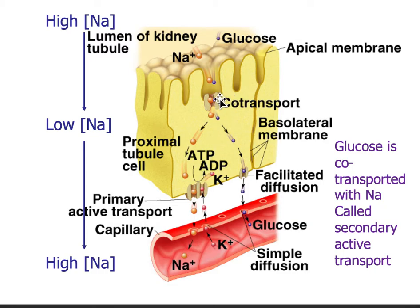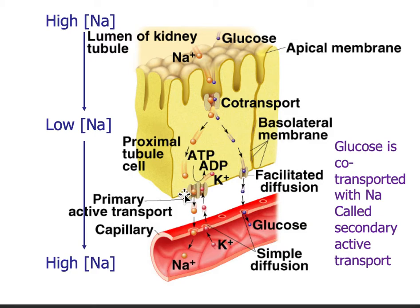This first step — going from the lumen into the proximal tubule cell — is a co-transporter. As sodium naturally flows in, glucose will pair up and be co-transported into the cytoplasm. We call this secondary active transport, because the very next step requires ATP for the sodium to be pumped out. Remember, this is a sodium-potassium pump, so as sodium goes into the blood, potassium is taken out and becomes part of your filtrate.